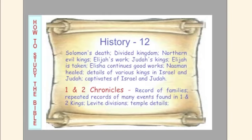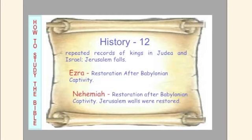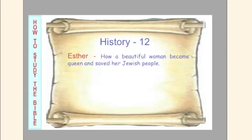First and Second Chronicles contain a record of families, repeated records of many events found in First and Second Kings, Levite divisions, temple details, repeated records of kings in Judea and Israel, and the fall of Jerusalem. Ezra covers restoration after Babylonian captivity. Nehemiah covers restoration after Babylonian captivity, and the Jerusalem walls being restored. Esther tells how a beautiful woman became queen and saved her Jewish people.